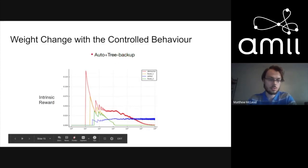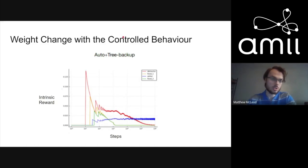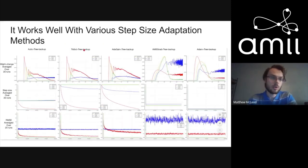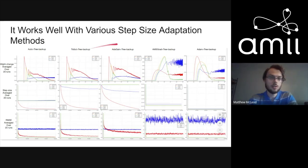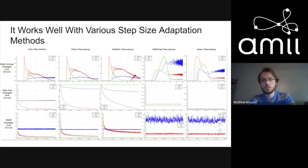Meanwhile the drifter, which we expected to continuously warrant intrinsic reward since you can always improve your estimate, tends to give a fairly consistent non-zero reward — which is really promising. The step size adaptation used in that graph is Auto, a successor to IDBD. The off-policy learner for the demons was tree backup. This pattern holds across many different step size adaptation methods: Auto, TIDBD, Eta-Gain, AMSGrad, and Adam all show the same behavior — distractor initially high then dropping, while drifter remains higher.